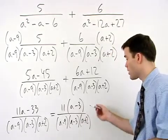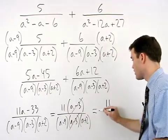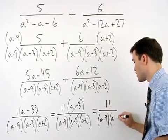So you can see that our a minus 3s cancel and we have 11 over a minus 9 times a plus 2.